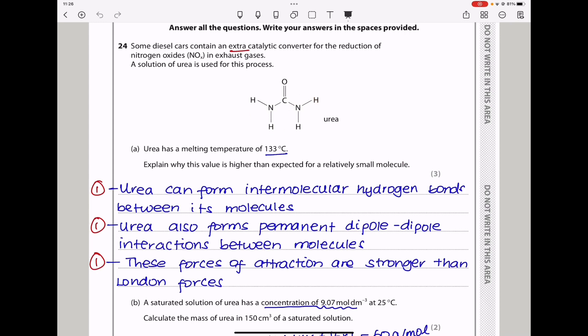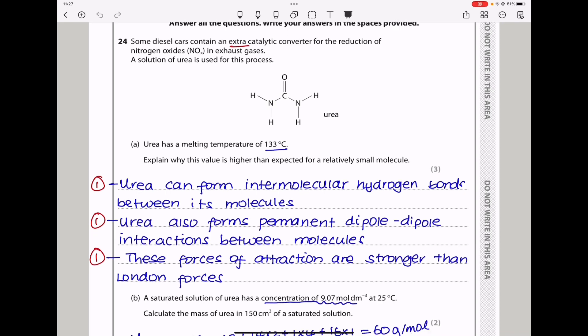If you look at the structure of urea, we can see there is a possibility of formation of intermolecular hydrogen bonds due to the nitrogens of one molecule and the hydrogens of another, or oxygen and hydrogen of another. So I said urea can form intermolecular hydrogen bonds between its molecules. Also urea can form permanent dipole-dipole interactions between its molecules. And these forces of attraction are stronger than just London forces. So we see, even if it's smaller, there is going to be a higher melting temperature.